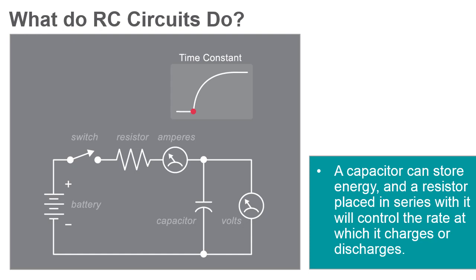The simplest RC circuit is a capacitor and resistor in series. When a circuit consists of only a charged capacitor and a resistor, the capacitor will discharge its stored energy through the resistor.